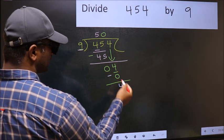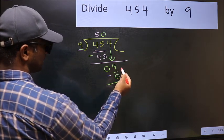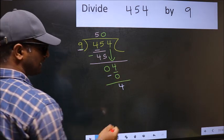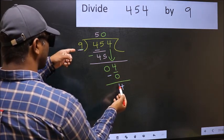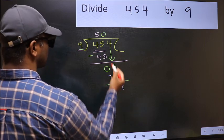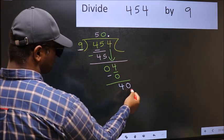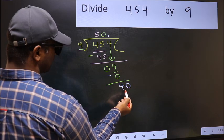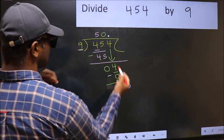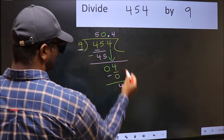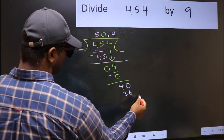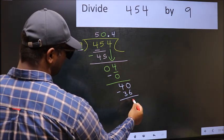Over here, we did not bring any number down, and 4 is smaller than 9. So now you can put dot and take 0. So 40. A number close to 40 in the 9 table is 9 fours 36. Now you should subtract. We get 4.